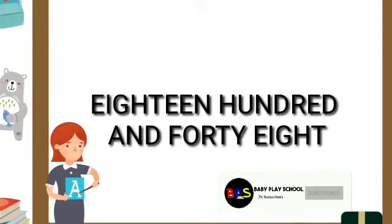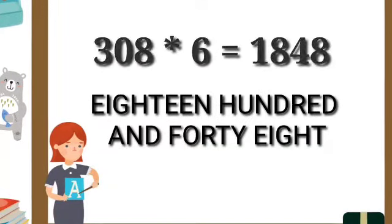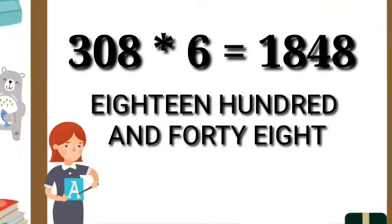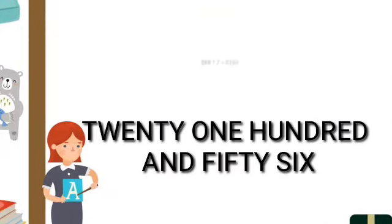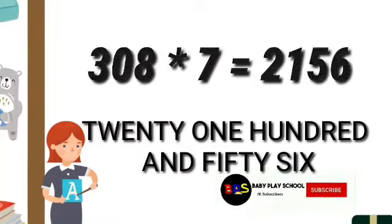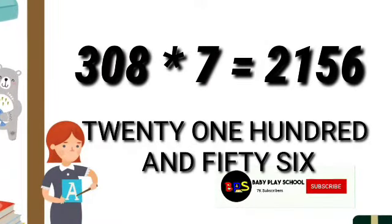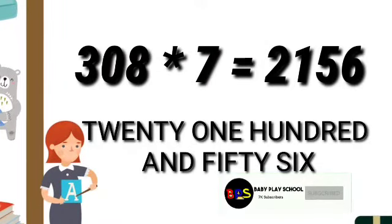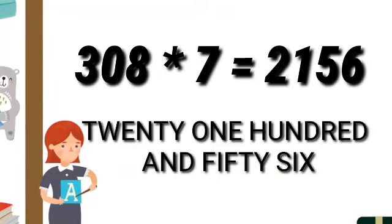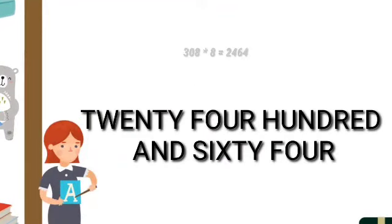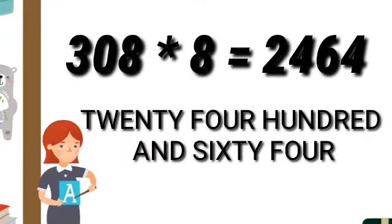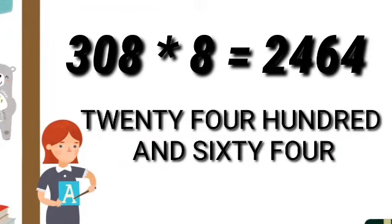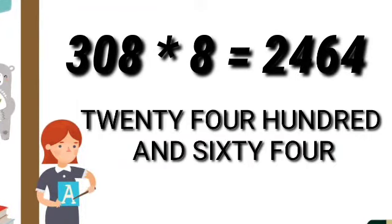308 sixes are 1848. 308 sevens are 2156. 308 eights are 2464.